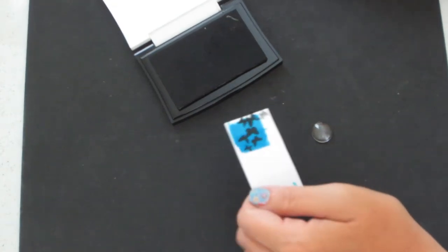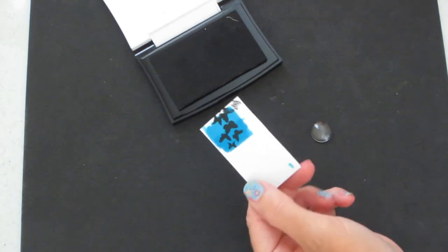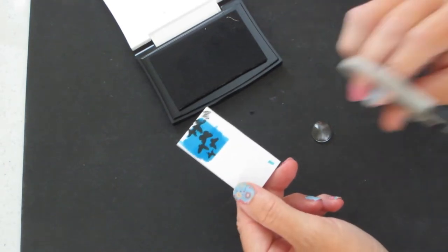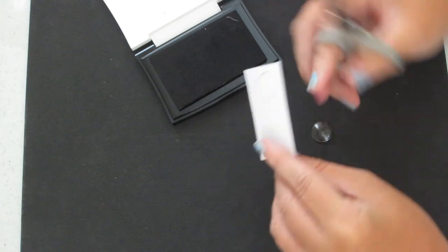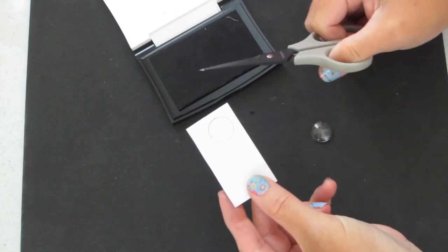And once I let that ink dry—I need to let it dry a few minutes. It's a pigment ink. If you touch it right away it'll smear. But it just takes a few minutes. Then I just flipped it over and I cut the circle out with my scissors.